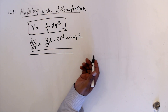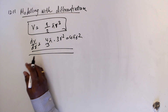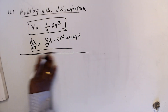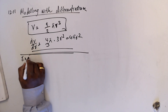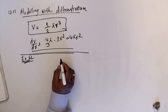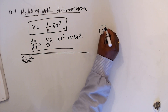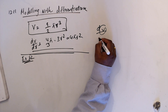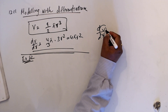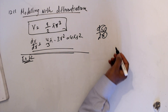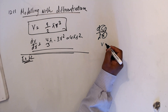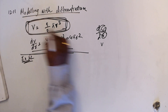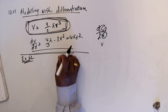Sometimes it will not be straightforward — then you have to find the relationship yourself. It's not just differentiation; it involves problem solving. For example, in example 22 in the book, you want to find the volume with respect to the height of a tank, but the relationship is not directly given, so we need to find the equation.